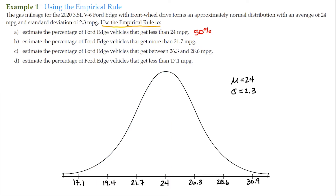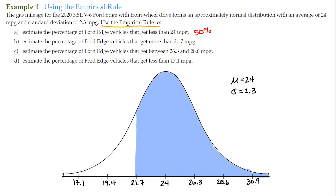Letter B: estimate the percentage of Ford Edge vehicles that get more than 21.7 miles per gallon. Here's 21.7 on the number line. From the mean and over, that's 50%. From 21.7 to 24 miles per gallon, using the empirical rule, that's 34%. So 34% plus another 50% gives us 84%. The answer is 84%.